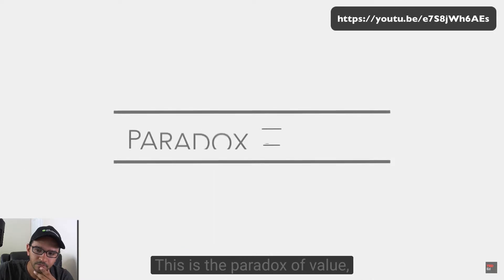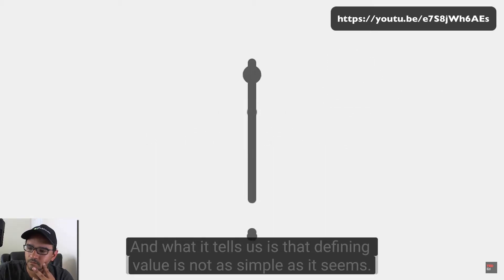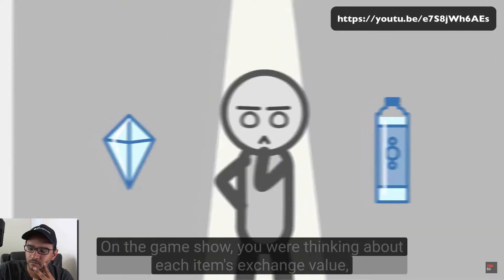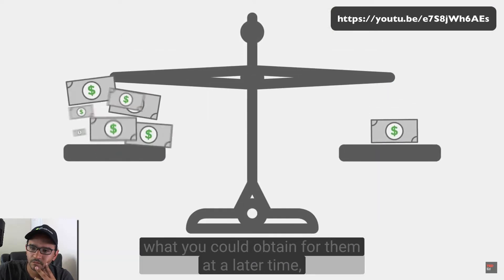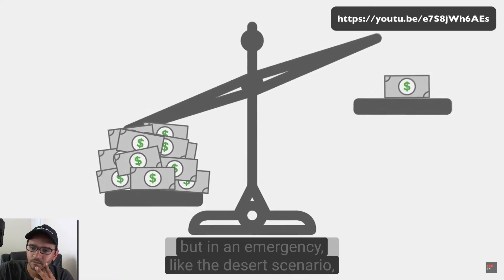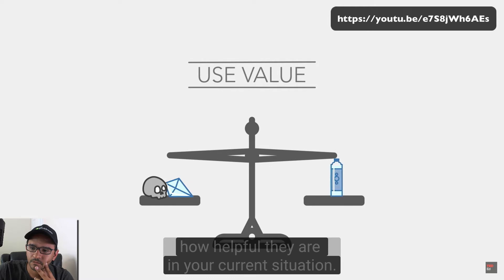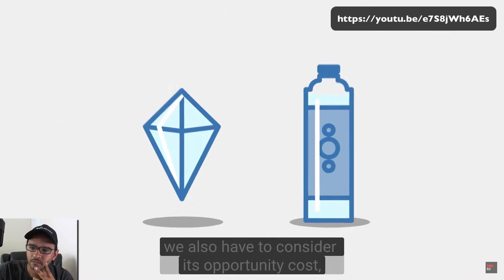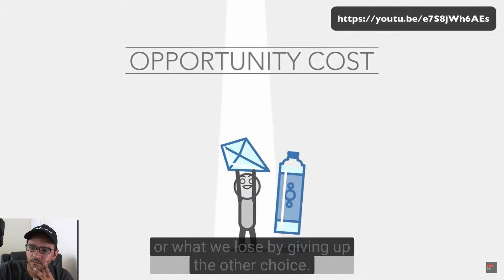This is the paradox of value, famously described by pioneering economist Adam Smith. And what it tells us is that defining value is not as simple as it seems. On the game show, you were thinking about each item's exchange value — what you could obtain for them at a later time. But in an emergency like the desert scenario, what matters far more is their use value — how helpful they are in your current situation. And because we only get to choose one of the options, we also have to consider its opportunity cost, or what we lose by giving up the other choice.